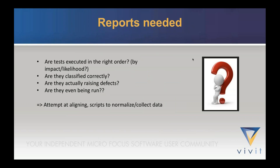The reports they wanted were along the lines of: are tests executed in the right order? What they really wanted was to execute tests first that had high impact and high likelihood. The quality output was poor, and with all the variation in list values, it was a complete nightmare to pull out that sort of information.